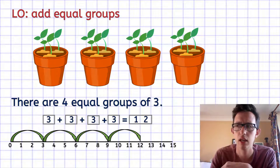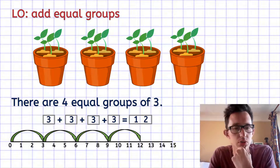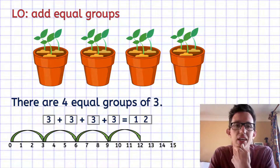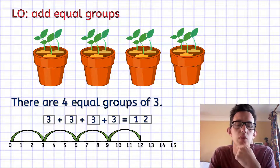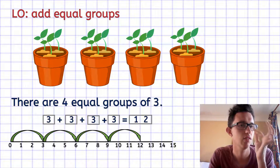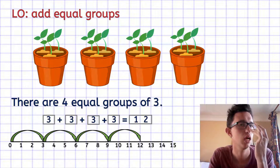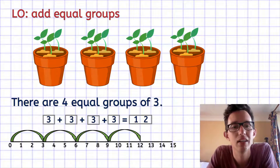Don't worry about the number line disappearing behind me — we didn't need it anyway. Counting along: one, two, three, four, five, six, seven, eight, nine, ten, eleven, twelve. So we had 12.